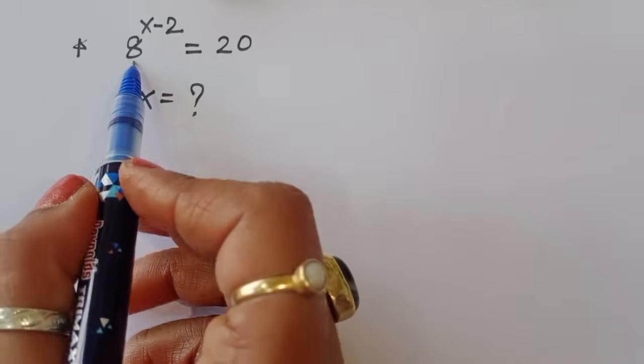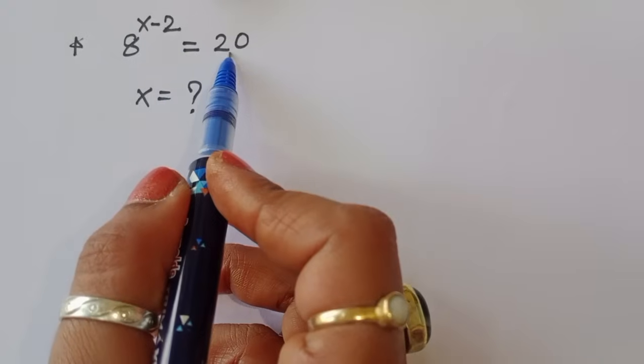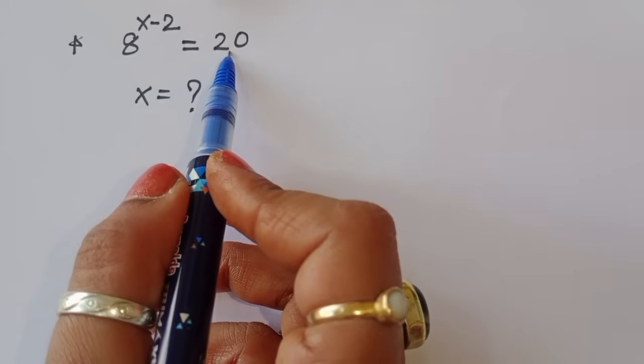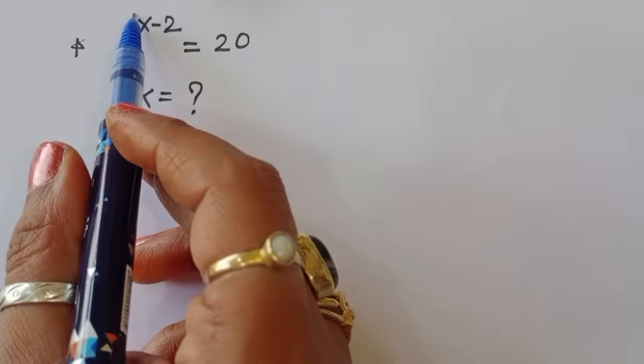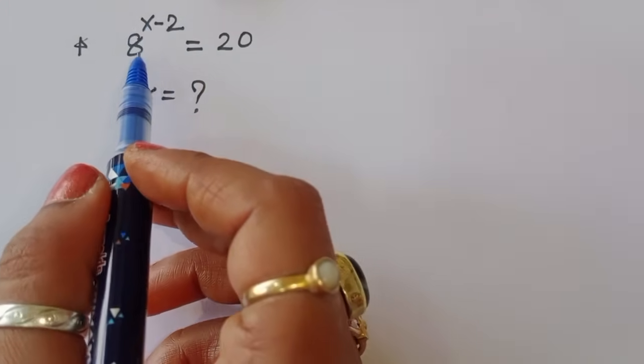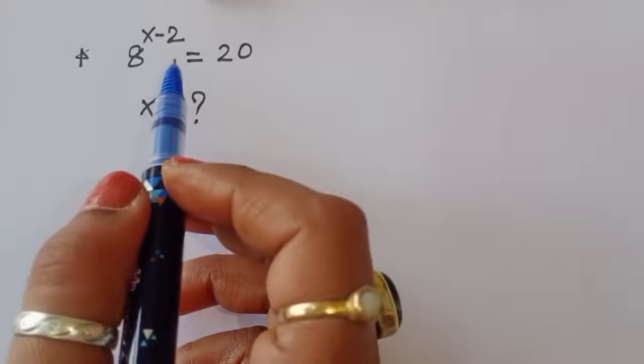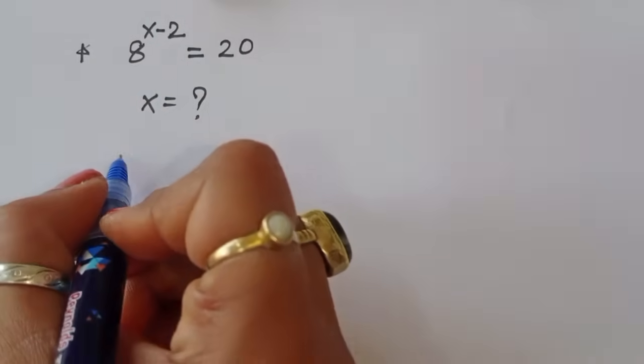The question is: given 8 power x minus 2 is equal to 20, we have to find out the value of x. Let's see the solution.